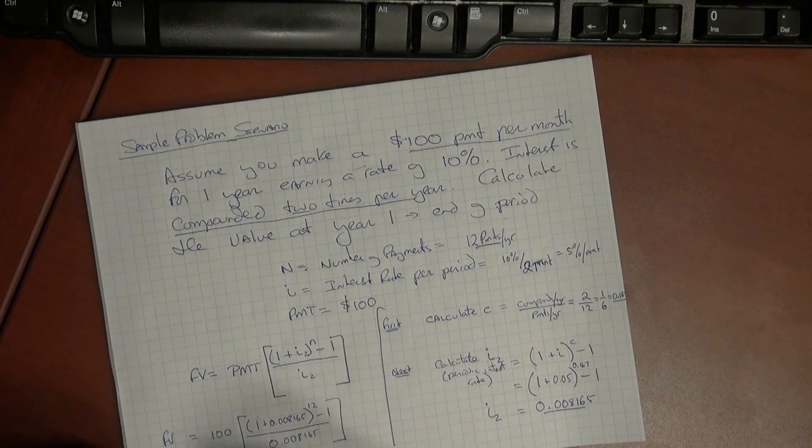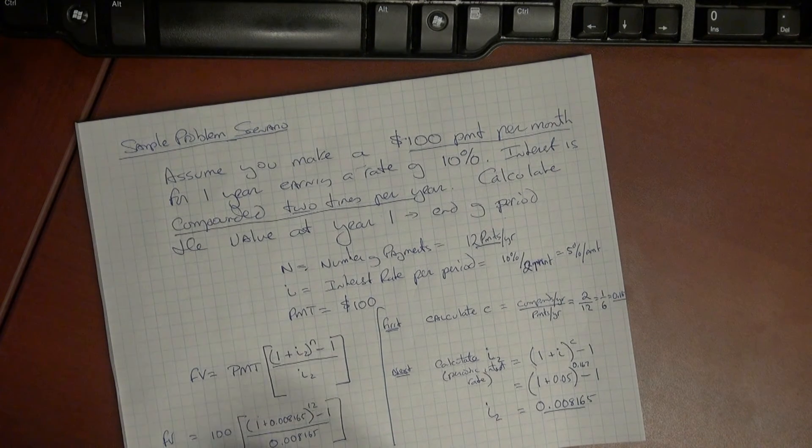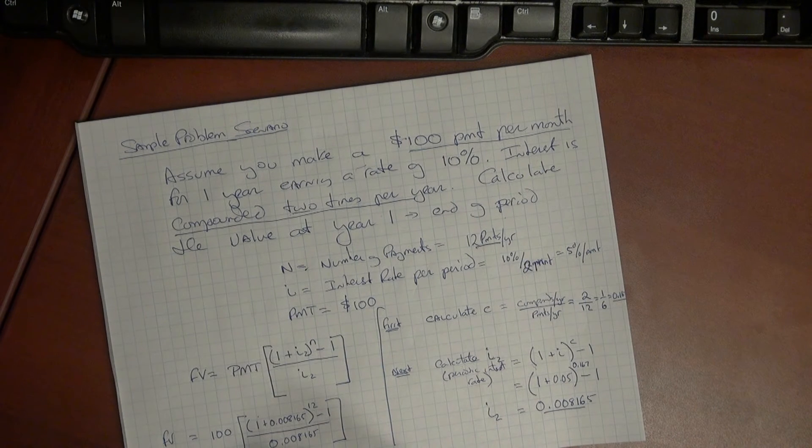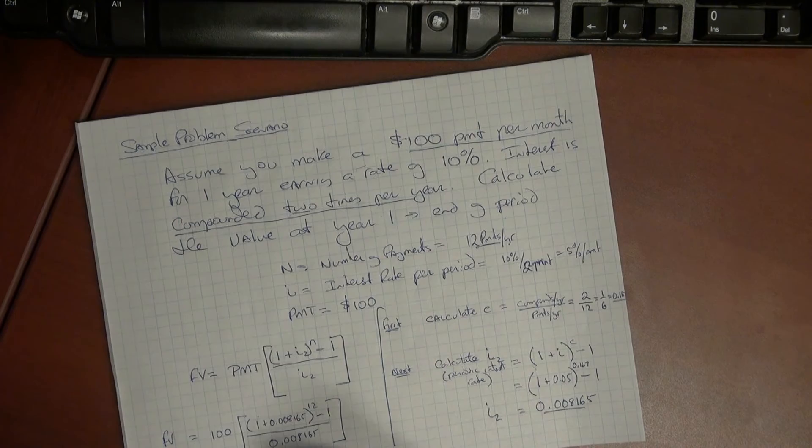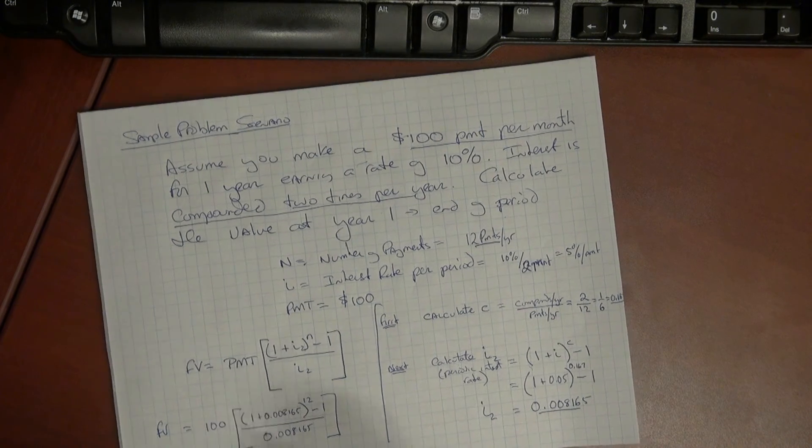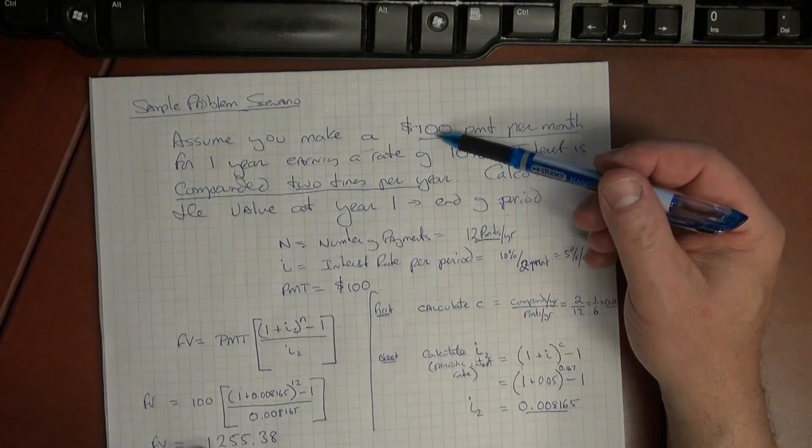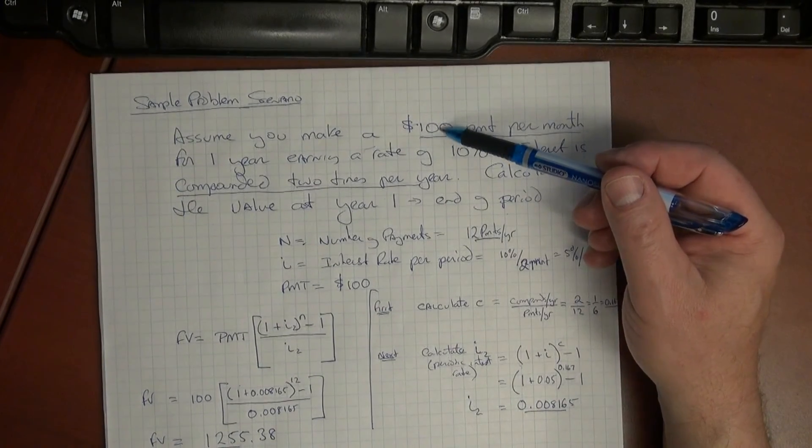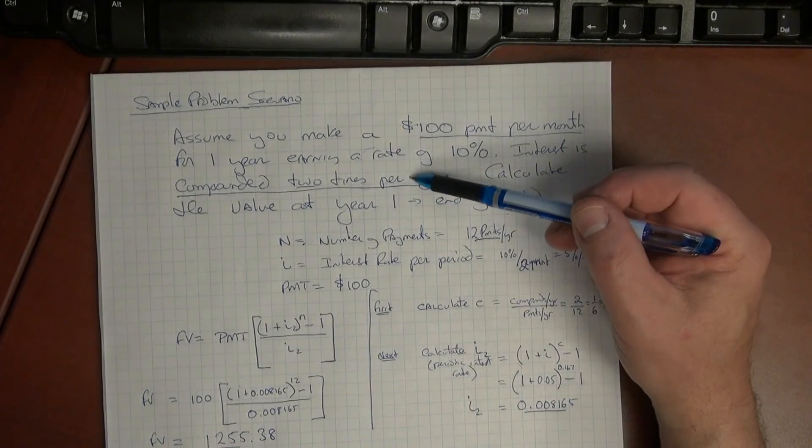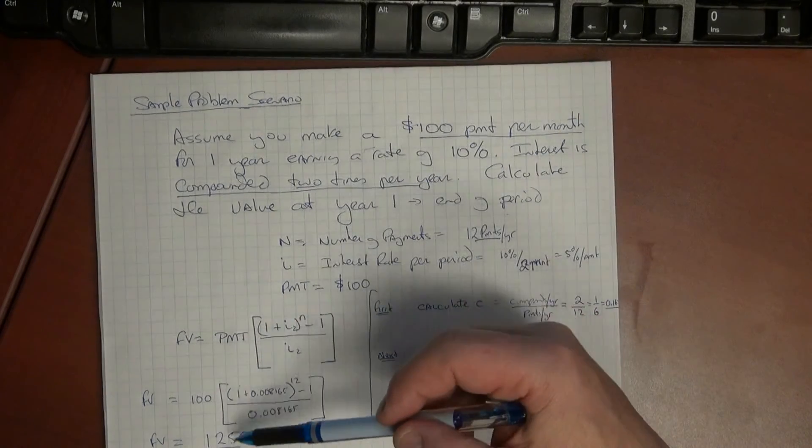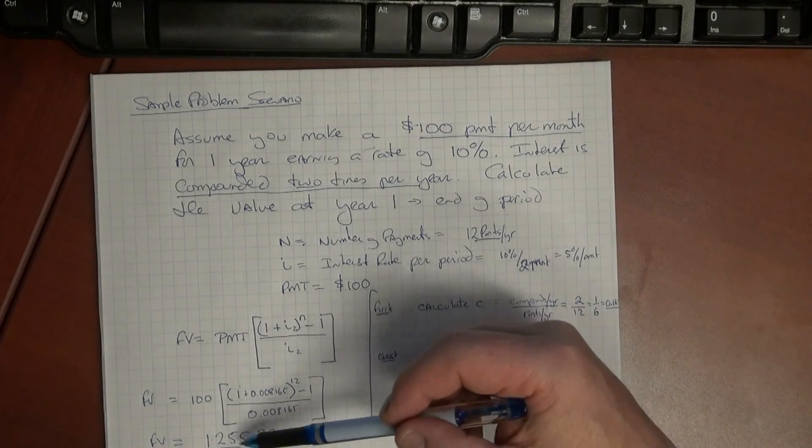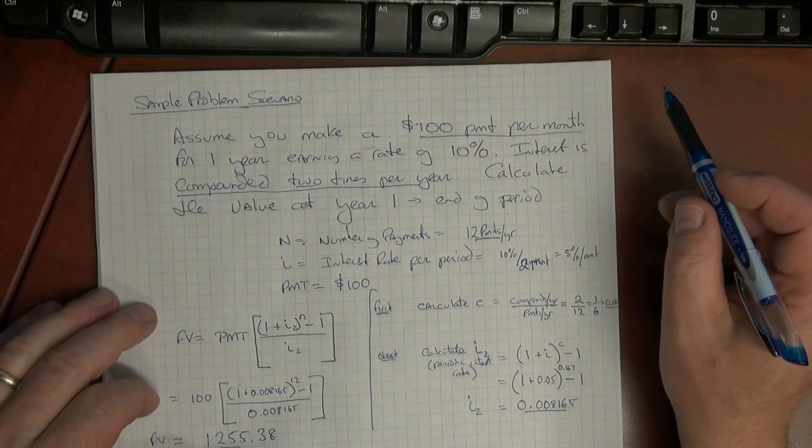And when we crunch the numbers on that, the future value comes out to $1,255.38. In other words, if you put a hundred dollars in the bank every month and it's earning 10 percent compounded two times a year, at the end of the year you will have twelve hundred fifty five dollars and thirty eight cents.